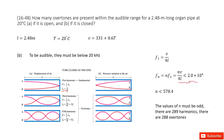We solve it and get N must be smaller than 578.4. Looking at the picture for the tube closed at one end, N must be the odd numbers. So you can see F1, then F3, F5 — we don't have even numbers. In this case, we must take the odd numbers from 1 to 578. So there are 289 harmonics, and 288 overtones. Thank you.